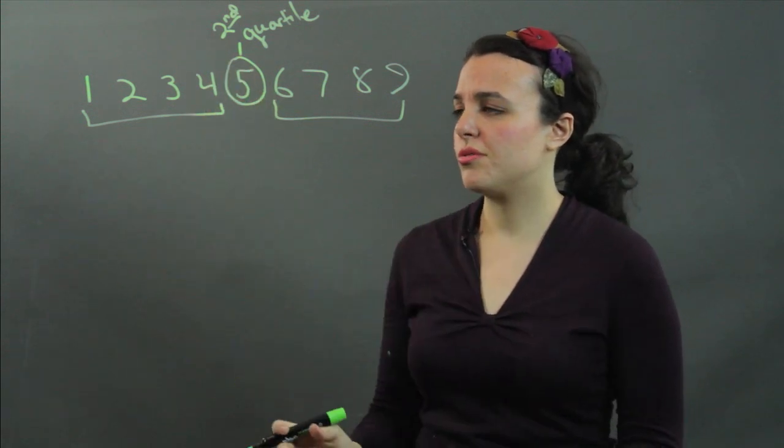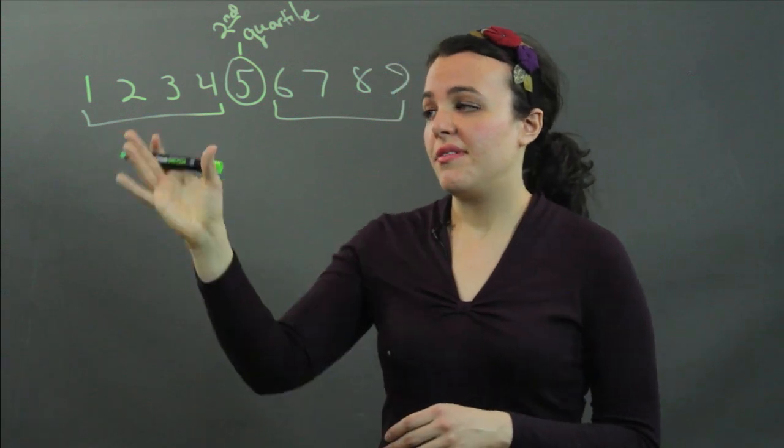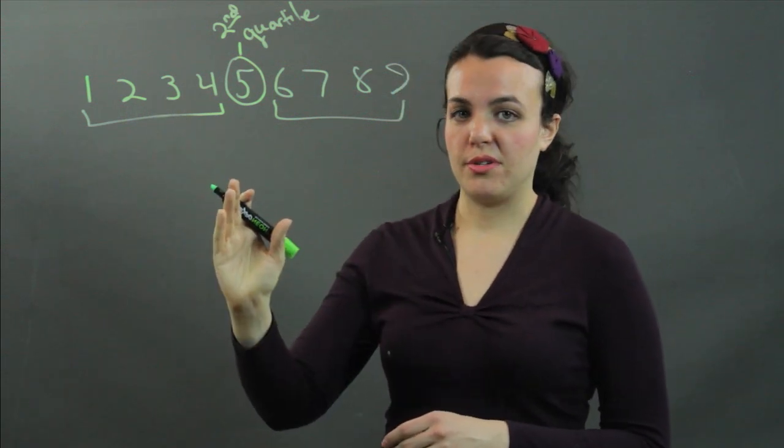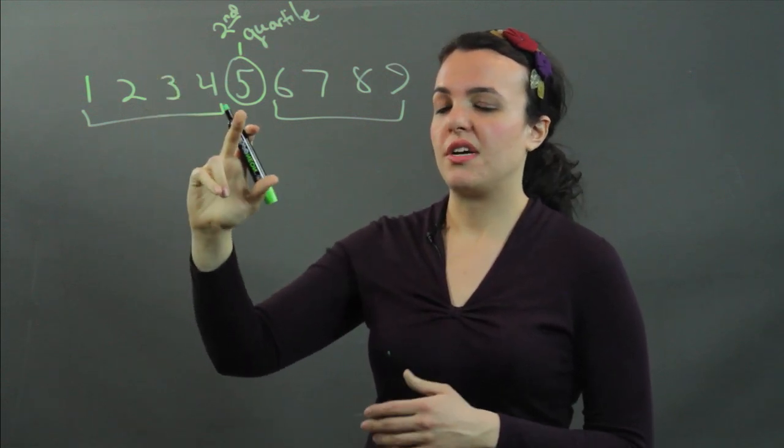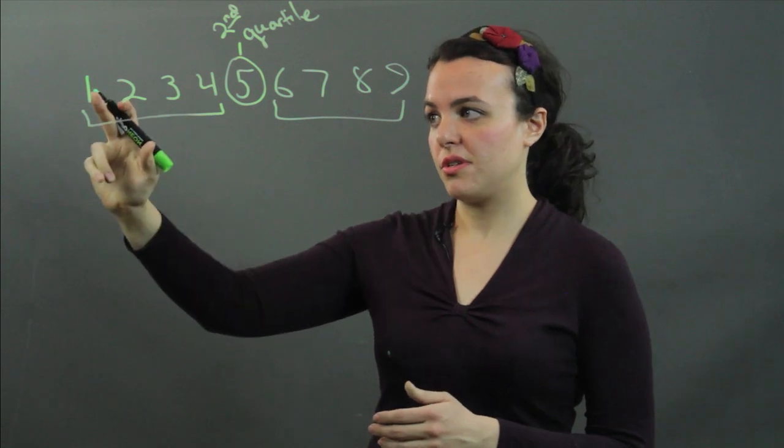So working with 1, 2, 3, 4, we have an even amount of numbers, right? So we can't pick a middle number. There isn't one. We just have to take the average of the first four.